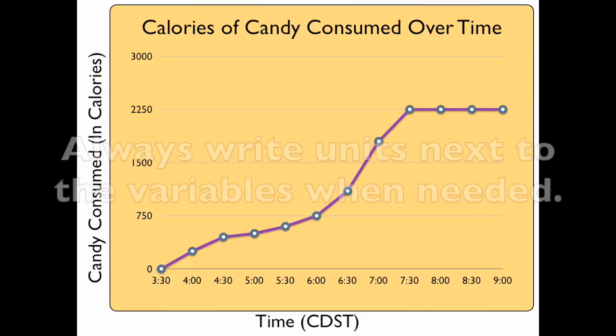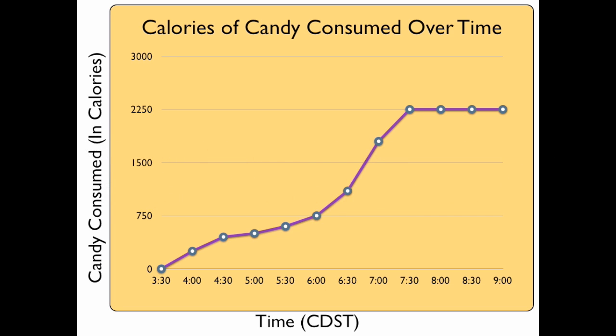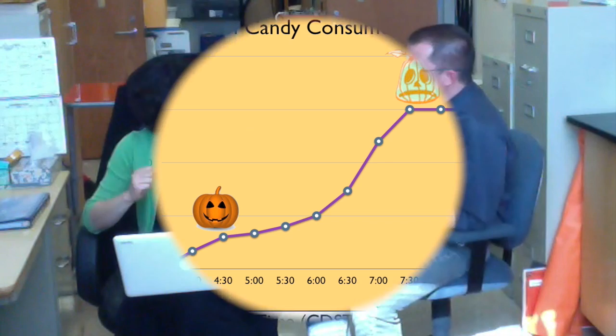Check out the third graph. I used a line graph to show the calories of candy that I ate that night too. You have the units in parentheses — that's really important to include, that the units of how you consume candy is in calories. And then the time is in Central Daylight Savings Time down at the bottom. You can see that I enjoyed the candy at first, but I had to quit about 7:30 because I started to get an upset stomach. Thank you so much — I feel so well-prepared for this Halloween with all this data represented in different graphs.